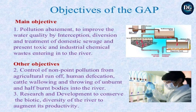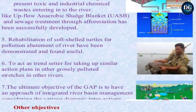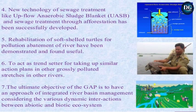Other objectives of the Ganga Action Plan are: first, control of non-point pollution from agriculture, human defecation, cattle wallowing, and throwing of unburnt and half-burnt bodies into the river. Second, research and development to conserve the biotic diversity of the river and augment its productivity. Third, new technology of sewage treatment, like upflow anaerobic sludge blanket and sewage treatment through afforestation, has been successfully developed.